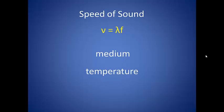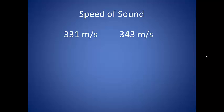The speed of sound also depends on the temperature of the medium. The higher the temperature, the faster the wave travels. The speed of sound at standard temperature and pressure is 331 meters per second. For most of our purposes, we are talking about sound in air at room temperature, and this value is found to be 343 meters per second. If we need to modify the speed of sound for a change in temperature, we use the value at standard temperature and pressure and the square root of the ratio of the temperature to the standard temperature.